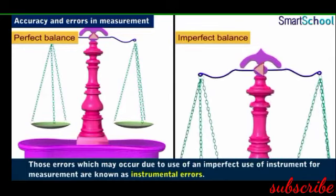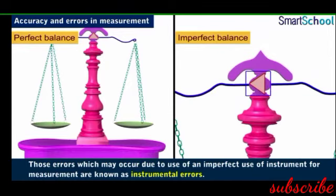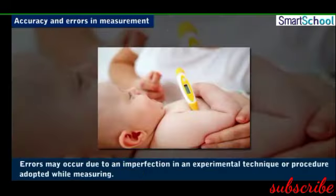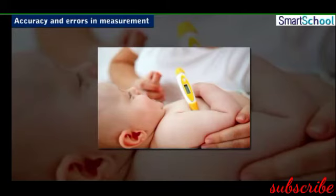For example, if the needle of a simple balance is skewed or bent, it always shows a weight that is more or less than the actual weight of the object being weighed. Errors may also occur due to an imperfection in an experimental technique or procedure, such as keeping a thermometer under the armpit, which will not measure the body's exact temperature as the mercury bulb is exposed to external factors such as air in the room, humidity, etc.